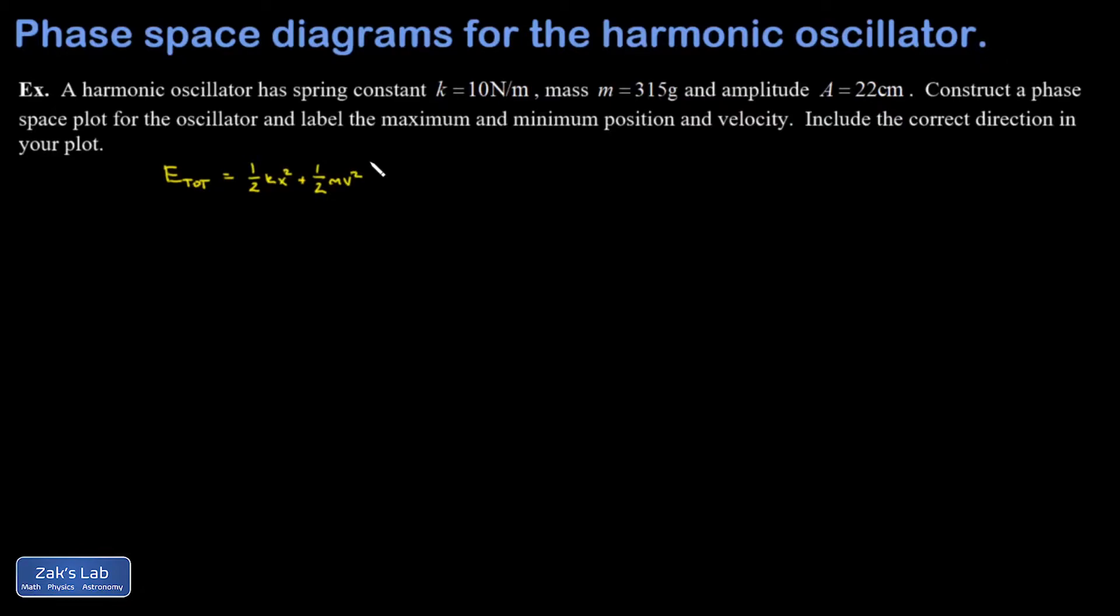That number should be a constant as long as we're saying that friction is negligible for this oscillator. We'll think briefly about what the graph of velocity versus position should look like. Velocity versus position means we're treating v as our y variable and x is our x variable.